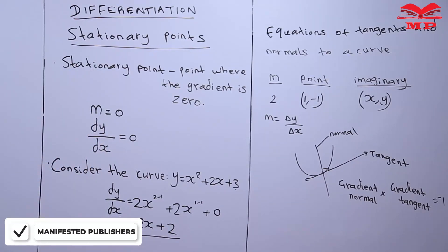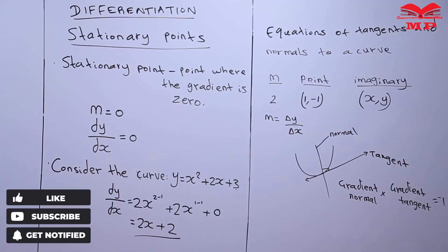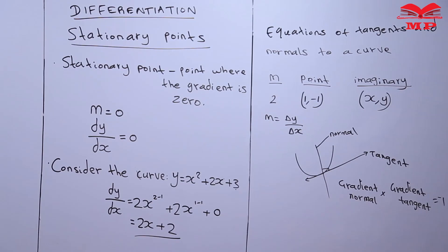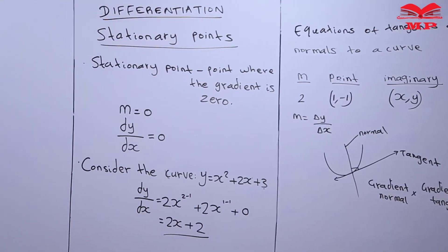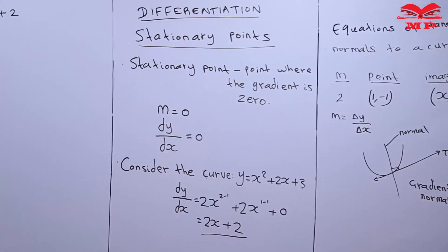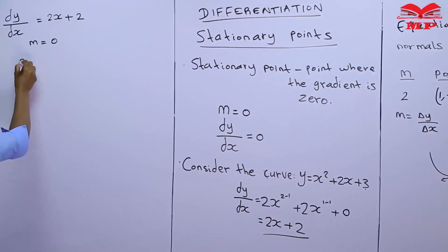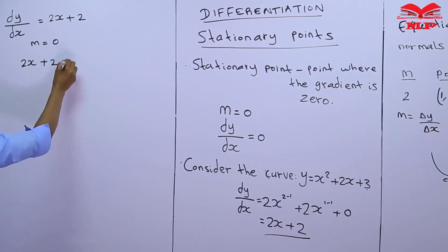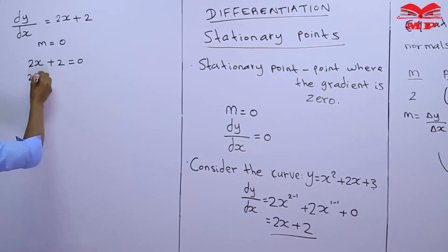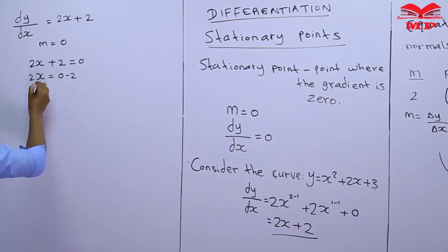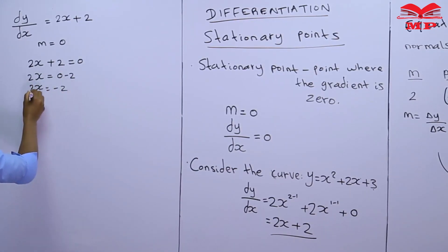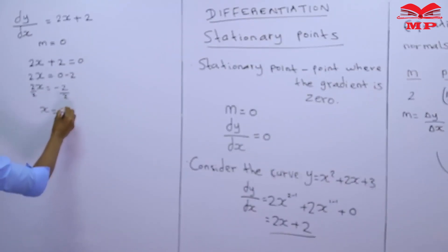At the stationary point, we set the gradient equal to 0. So we equate dy/dx = 2x + 2 to 0. Solving: 2x + 2 = 0, so 2x = -2, therefore x = -1.